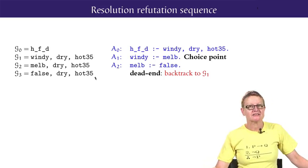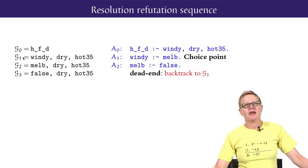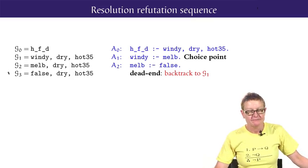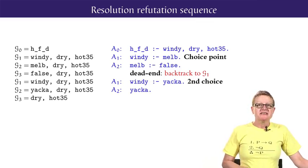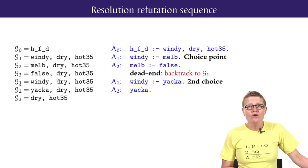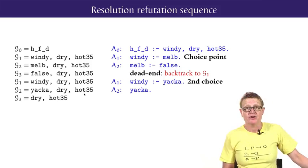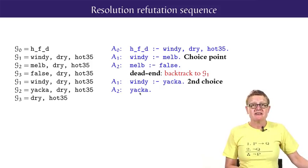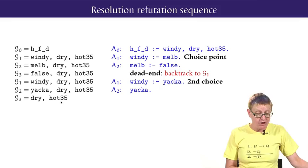Prolog then backtracks to the goal G1 at the last choice point and proceeds from there with the second program clause with windy as its head, namely windy if yakka. Australians like abbreviations. We're going to use yakka for short. Proceeding from here, the new goal G2 becomes yakka, dry, hot35. The fact yakka is then in the program then gives a resolution to the shorter goal G3, consisting of dry, hot35.